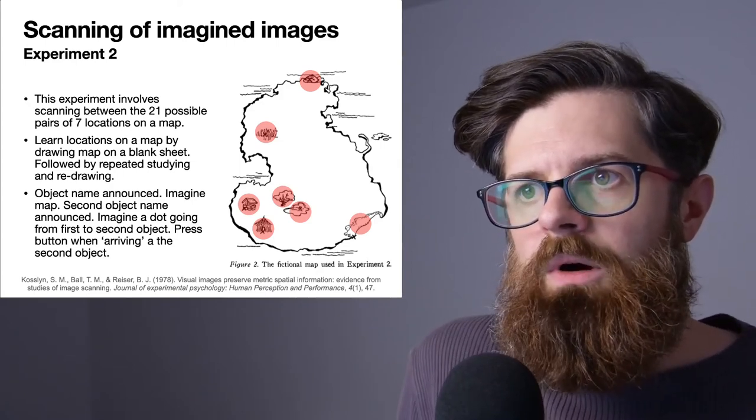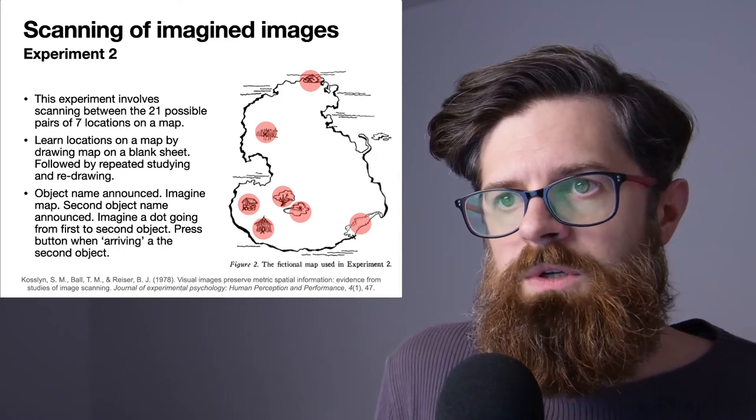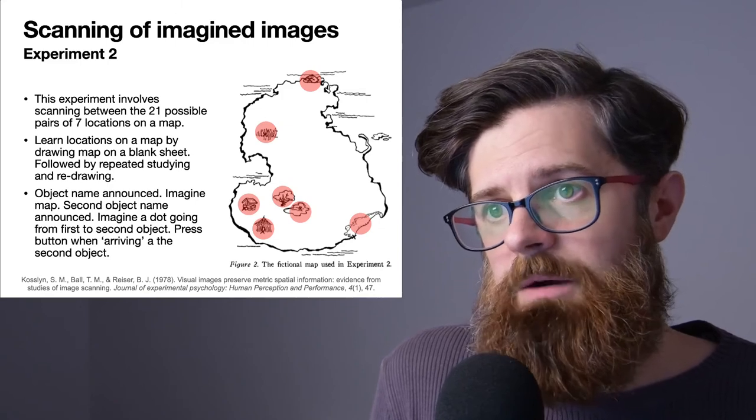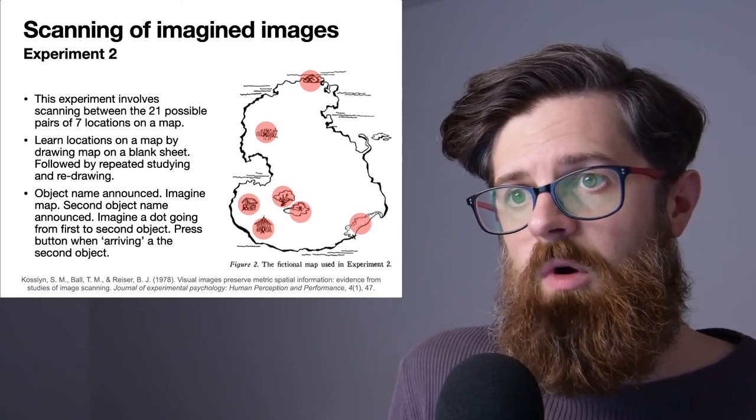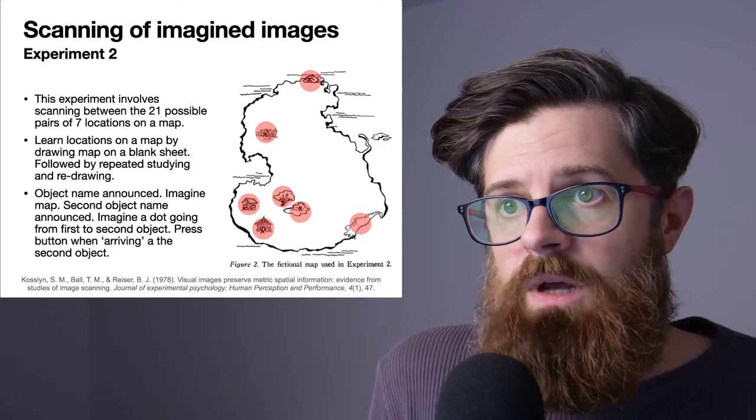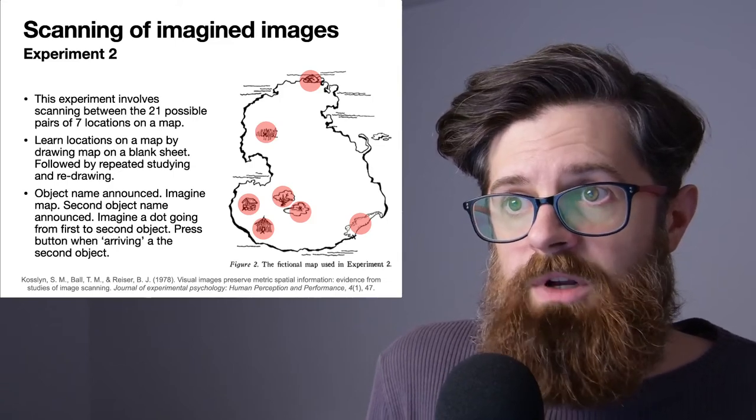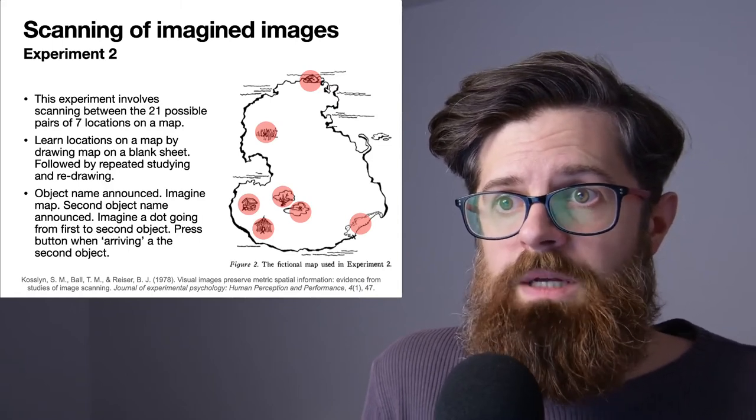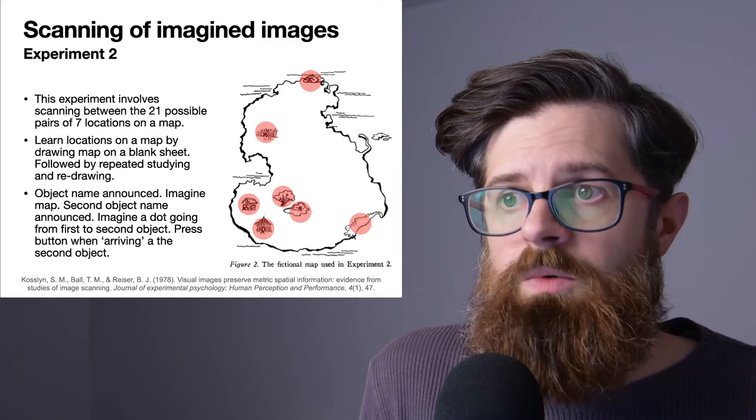What they were asked was to imagine a black dot moving from one point to another. We have seven locations here and that gives us 21 possible pairs.